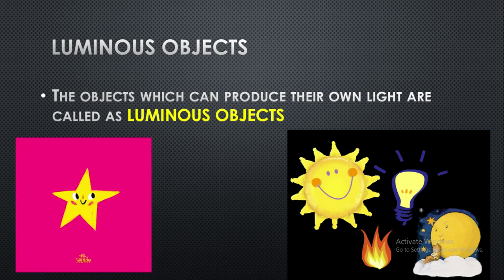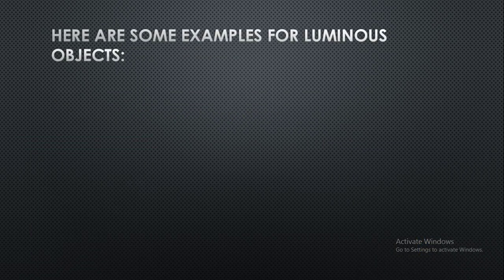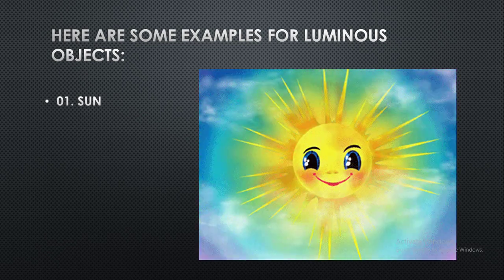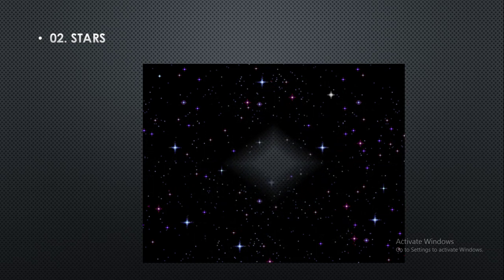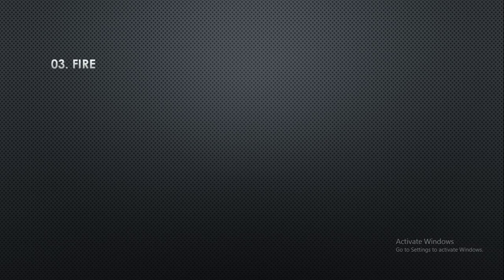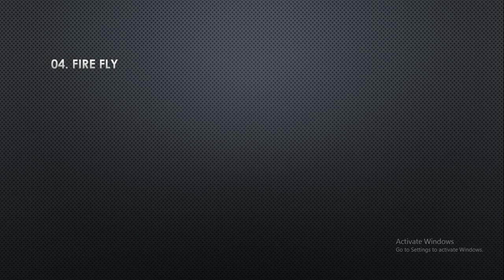These objects have the ability to produce their own light. Here are some examples of luminous objects: the first one is the Sun, the second one is stars, the third one is fire, and the fourth one is firefly.